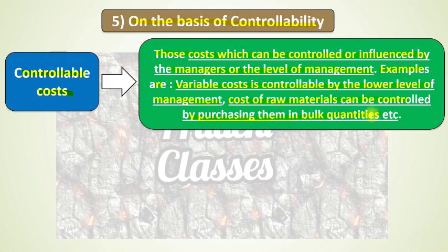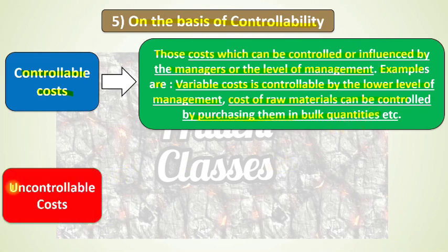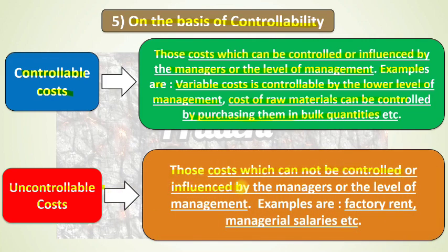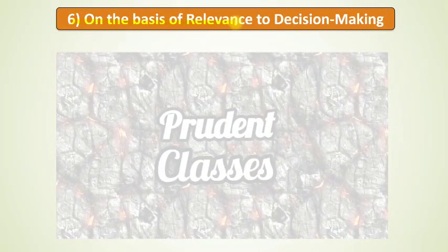Uncontrollable costs are those which cannot be controlled or influenced by managers or the level of management. Examples include factory rent and manager salaries. Once you have decided to rent a building at a certain amount, you must pay that amount regularly — nothing can change it. The same concept applies to managerial salaries.